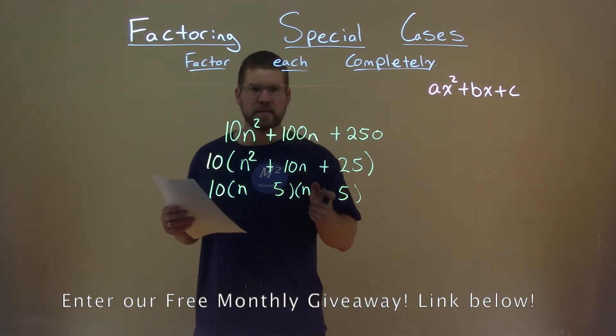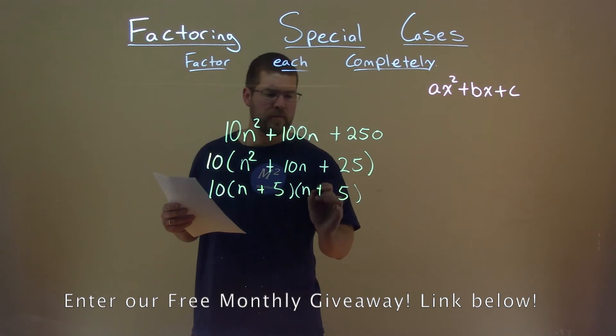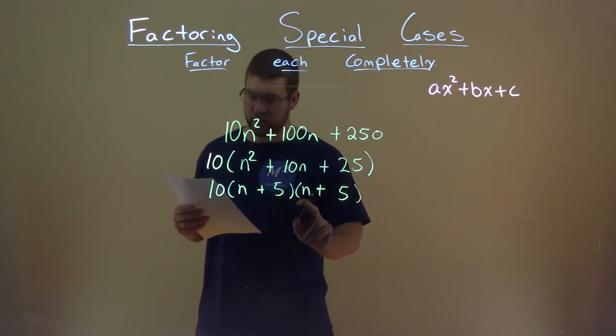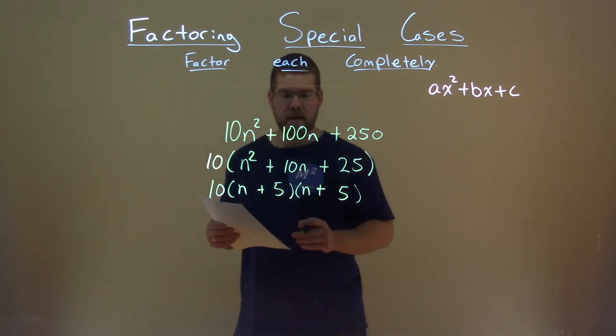But what about the inside? Well, if we make this positive and make it positive, we see that n times 5 is 5n, 5 times n is 5n. Add them together, we get the 10n.